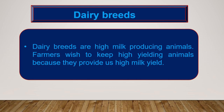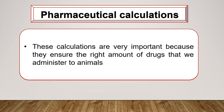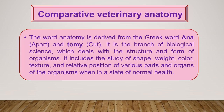Dairy breeds are high milk-producing animals. Farmers wish to keep high-yielding animals because they provide high milk yield. Pharmaceutical calculations are very important because they ensure the right amount of drugs that we administer to animals. The word anatomy is derived from the Greek words: ana means apart and tomi means cut. It is the branch of biological science which deals with the structure and form of organisms. It includes the study of shape, weight, color, texture, and relative position of various parts and organs of the organism when in a state of normal health.